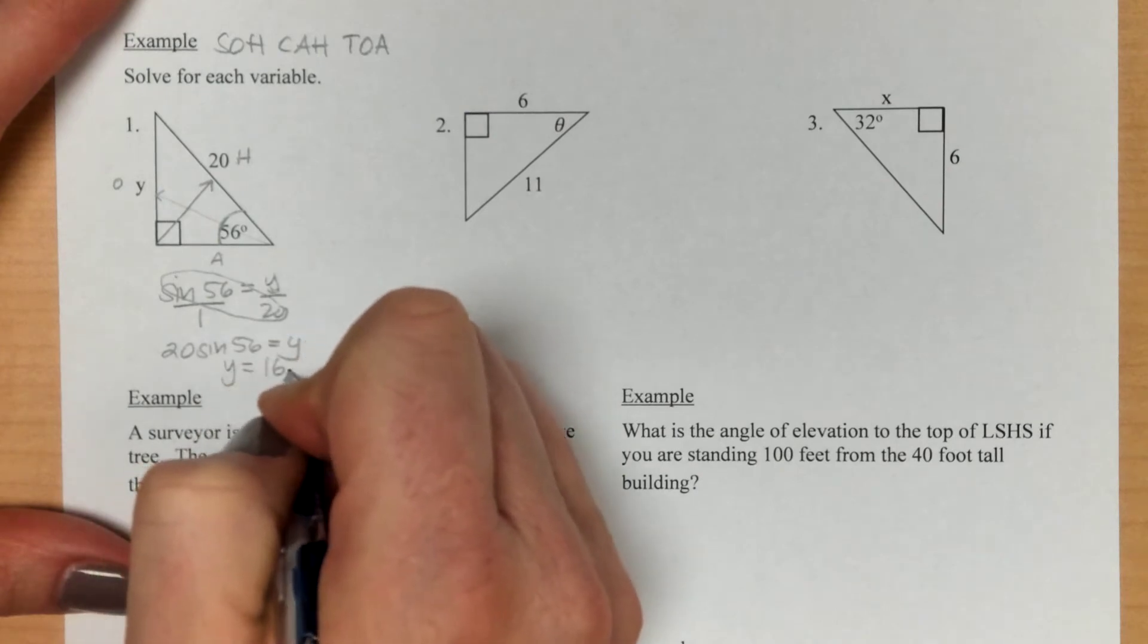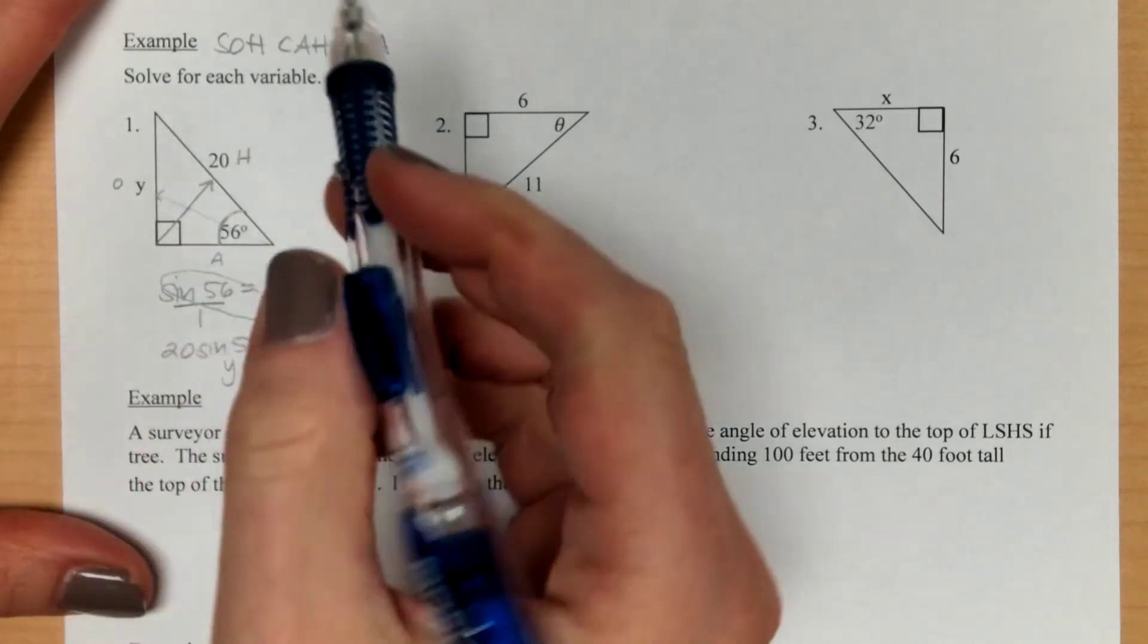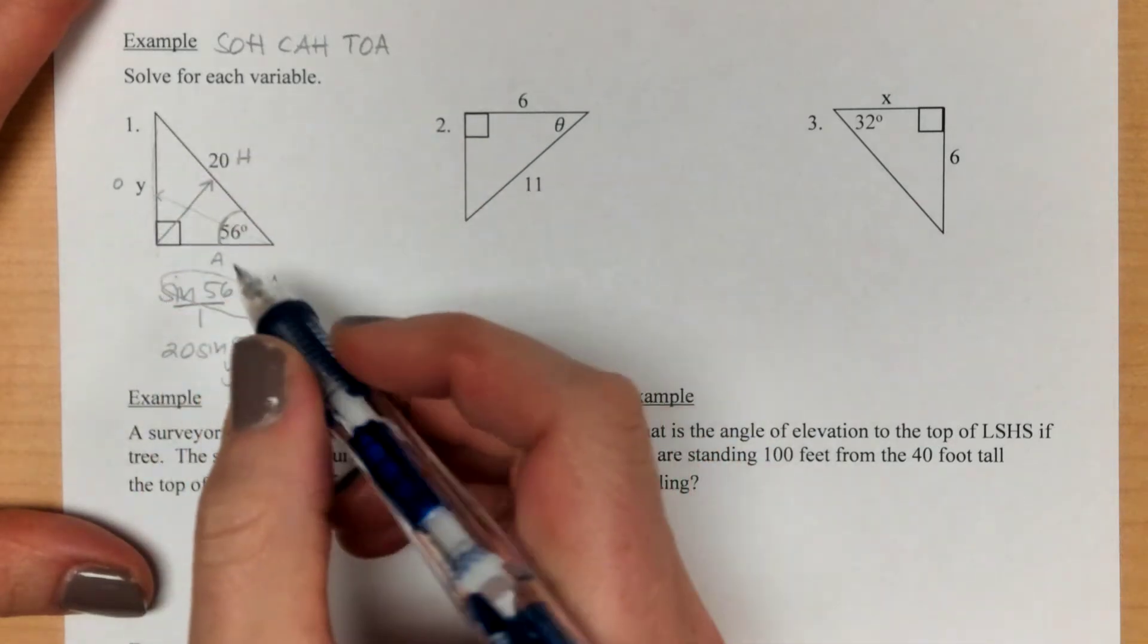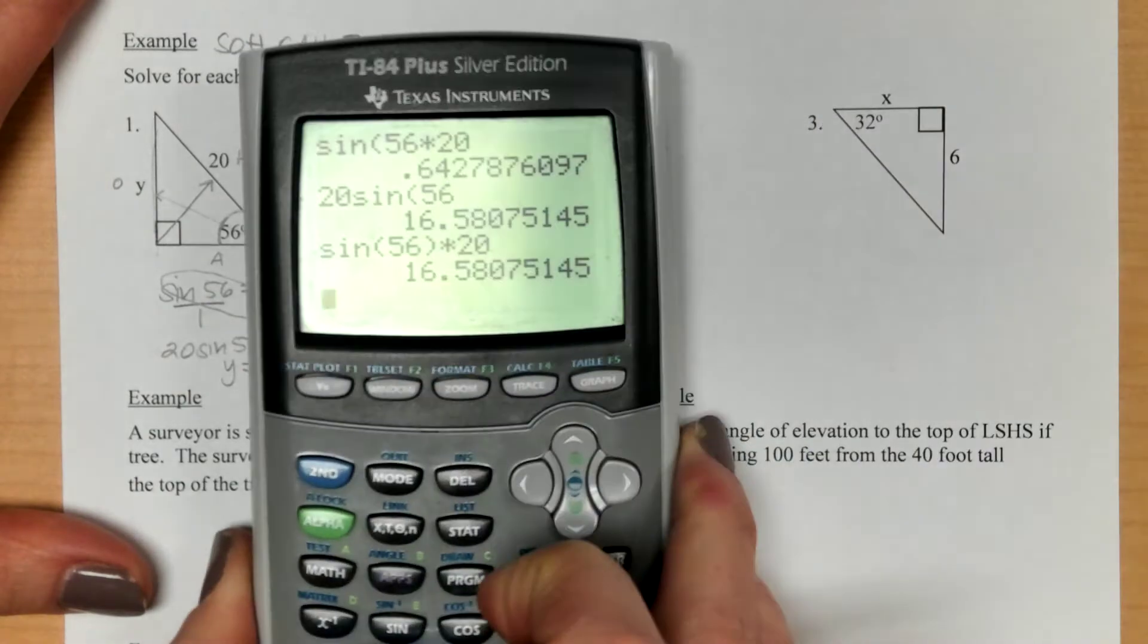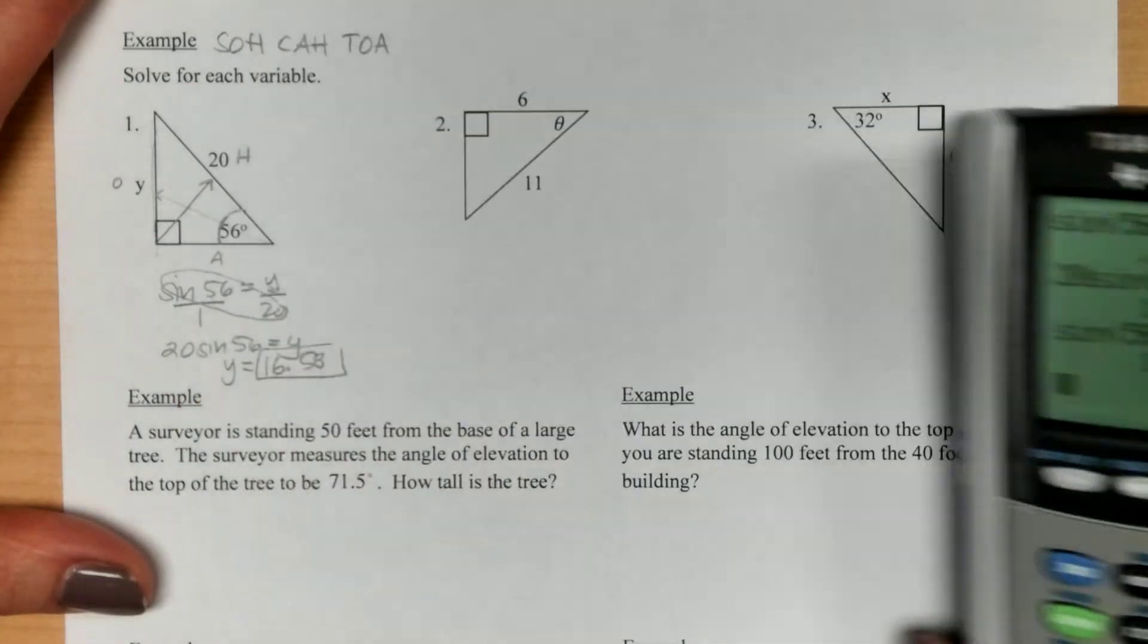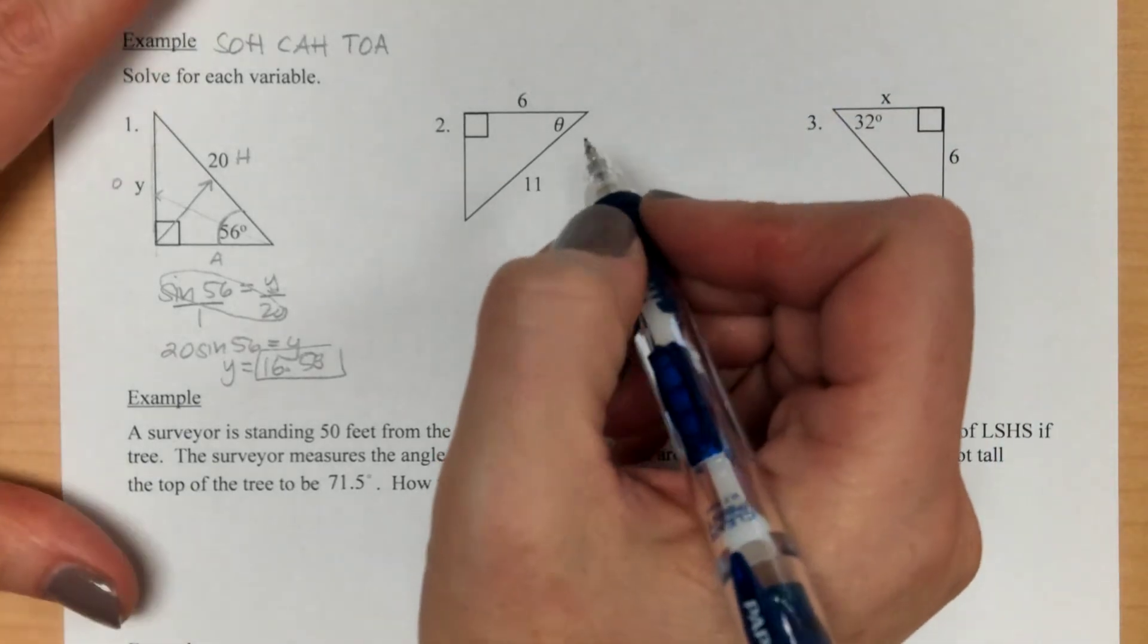And your answer should be believable. If your hypotenuse is 20, it does make sense that this side could be 16. It really shouldn't all of a sudden get a side of like 1 or originally what we had was 0.64. That shouldn't be happening. So your answer needs to make sense.